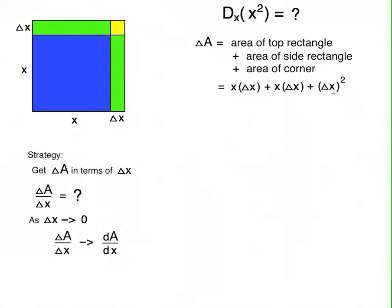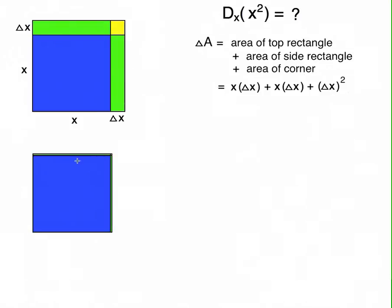Now, here's the important point. The green ones are much bigger than the yellow one. You can see that even more if we shrink the rectangle down a little bit, like this. Here, delta x is very small, but the green ones are still kind of big, because they have one dimension equal to x, even though the other dimension is shrinking. The dimension equal to x always stays the same.